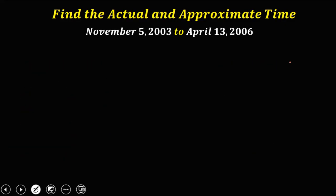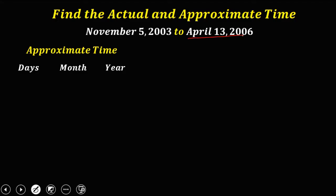For the next given: November 5, 2003 to April 13, 2006. First, solve for the approximate time. Start with April 13, 2006: days 13, April as a number is 4, year 2006. Then November 5, 2003: days 5, November as a number is 11, year 2003. Now subtract.